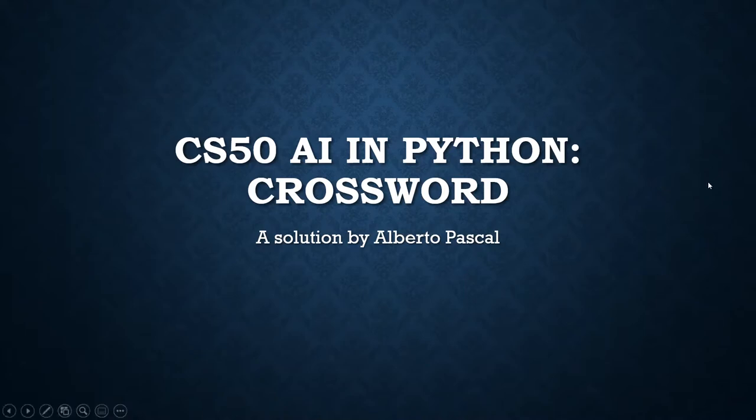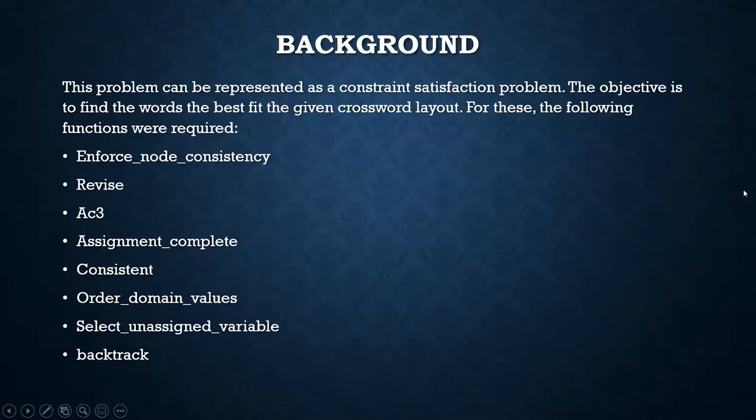A little bit of background first. This problem can be represented as a constraint satisfaction problem, and the objective is to find the words that best fit the given crossword layout. We will be looking at the functions that were modified here.